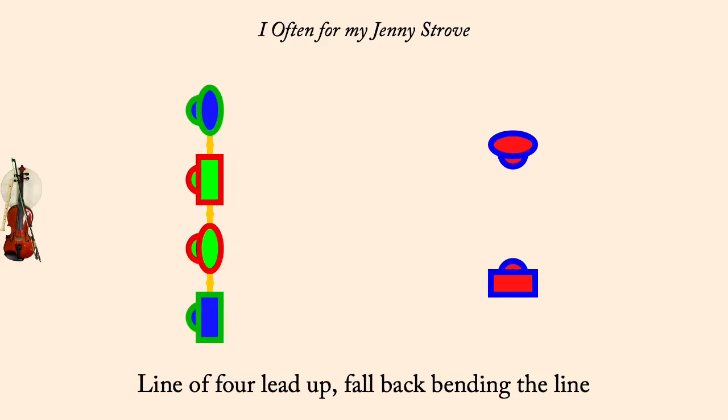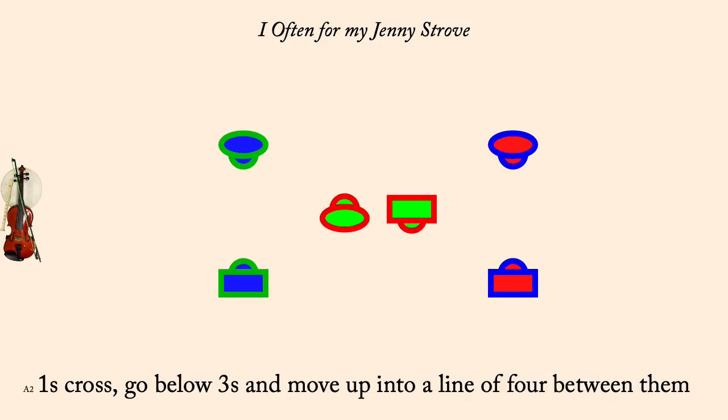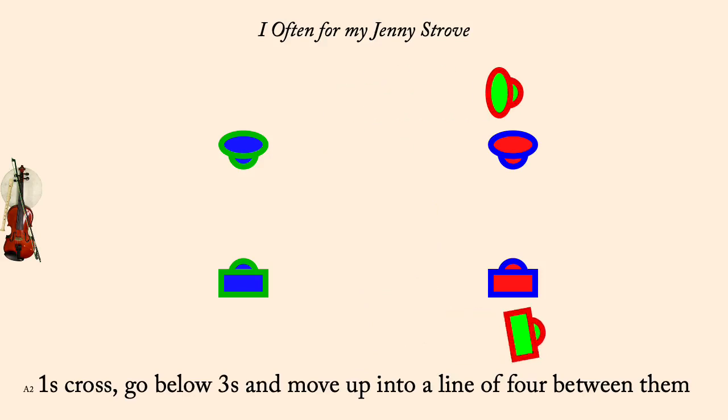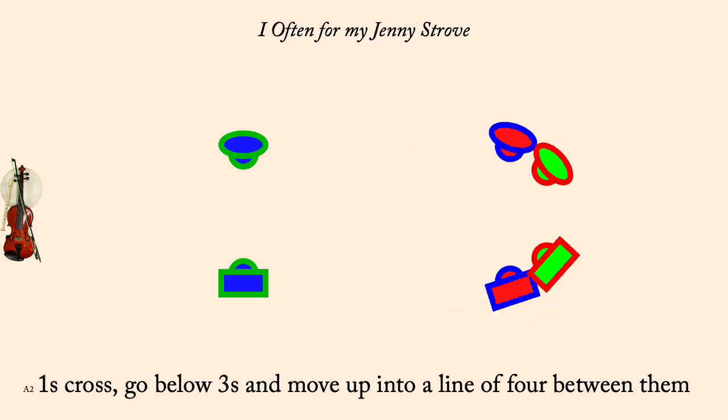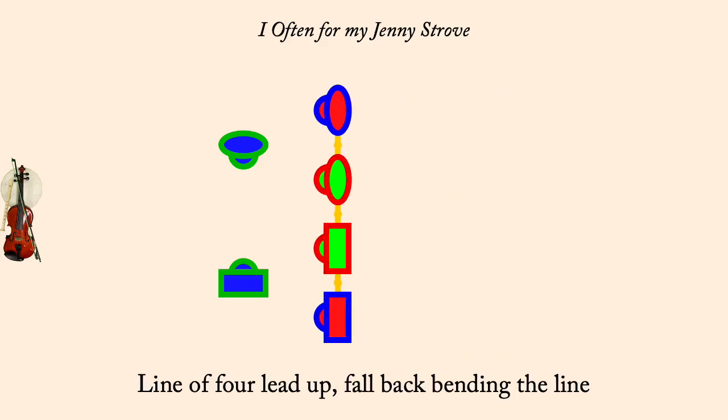Ones cross, go below threes, come up and form a line of four between them. Line of four, up a double, fall back, bending the line.